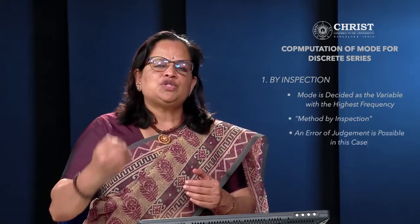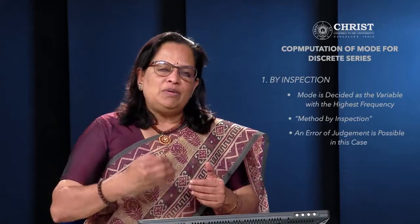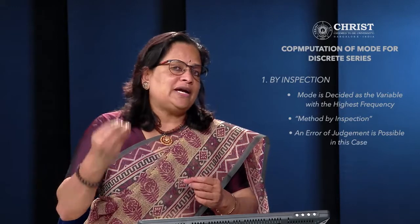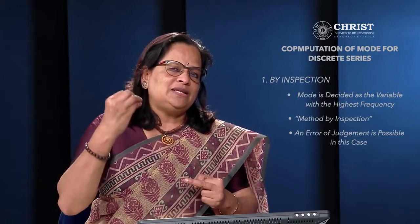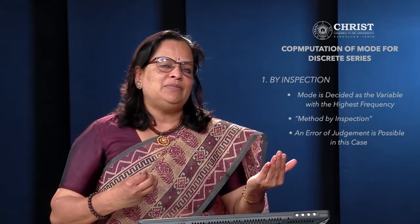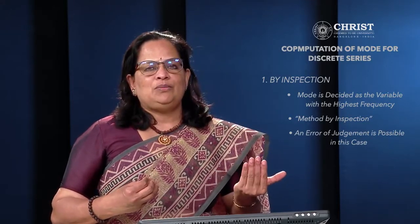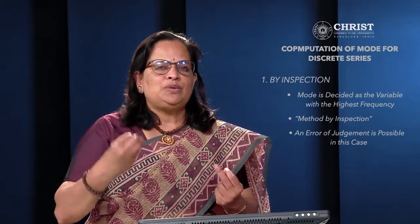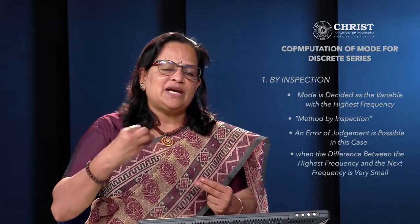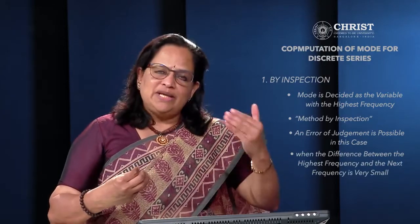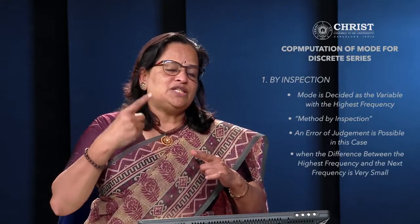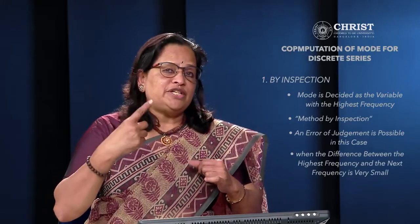An error of judgment is possible with the inspection method. For example, in the problem I will explain, value 65 has the highest frequency, so by inspection we would say that is the modal value. But when we do the grouping table and analysis table, we find that 64 is the actual modal value. This error occurs especially when the difference between the highest and next highest frequency is very small.